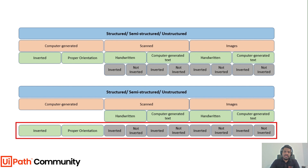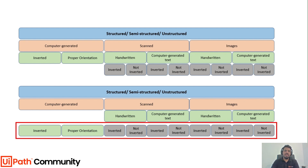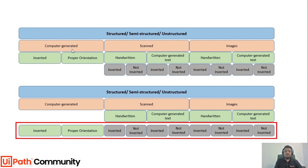Depending on your scenario, you might come across structured documents, semi-structured documents, or even unstructured documents. Before selecting the OCR engine, we need to look at these documents and understand the different variations. This applies to all three types. For each type — structured, semi-structured, and unstructured — identify the different categories, such as computer-generated documents, scanned documents, or images.